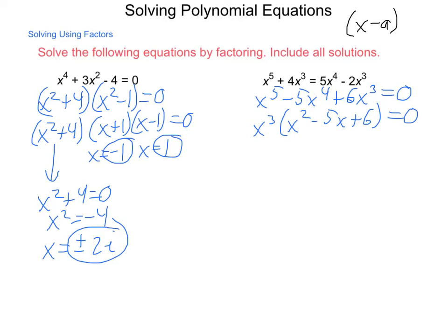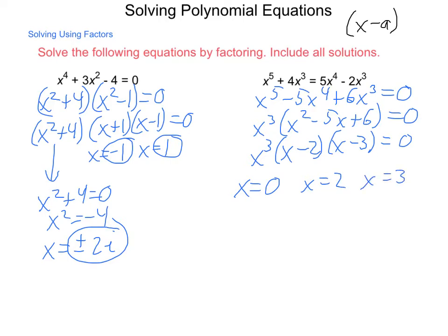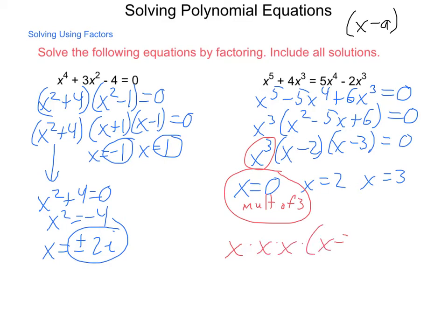Factoring what's inside the parentheses: what multiplies to a positive 6 and adds to a negative 5? That would be x minus 2 and x minus 3 equals zero. So our solutions are x equals zero, x equals 2, and x equals 3. As a note, x equals zero has a multiplicity of 3 because it was an x cubed — meaning the full factored form was x times x times x times x minus 2 times x minus 3 equals zero.